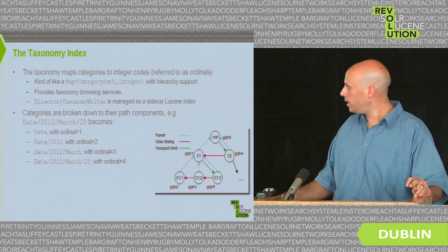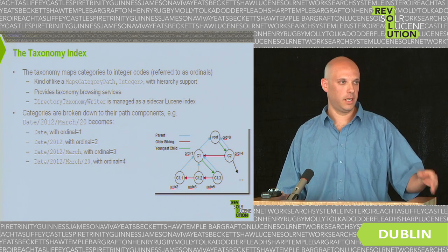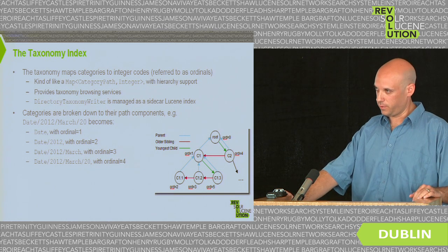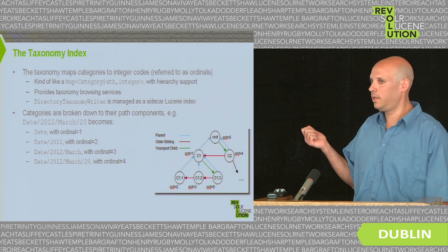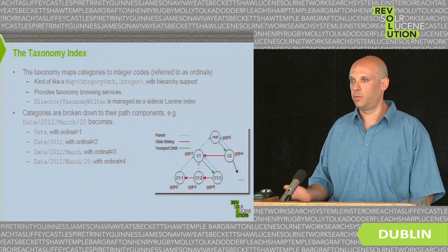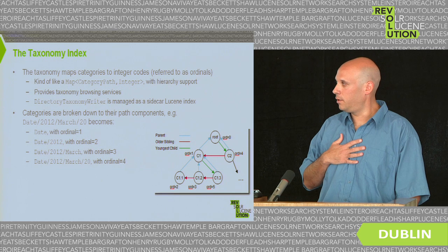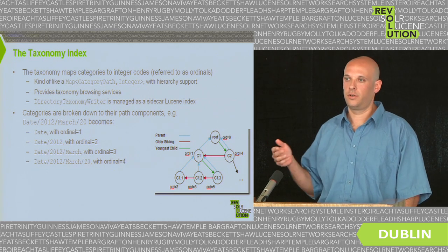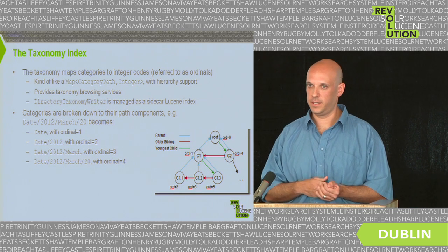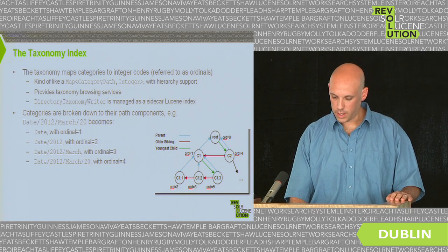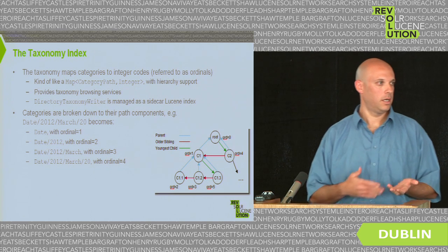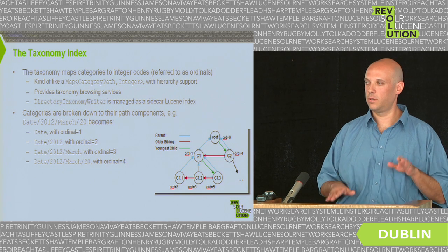When you index a category like date/2012/March/20, it's broken down to its path components and each component is assigned an integer code — date gets 1, and so on through 4. The taxonomy is modeled as a normal tree representation, currently using parallel integer arrays, which lets you browse the taxonomy and compute top-K facets very efficiently.